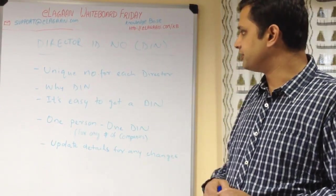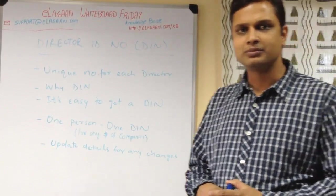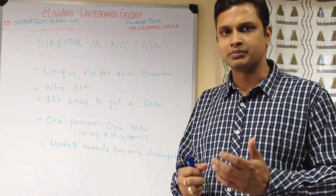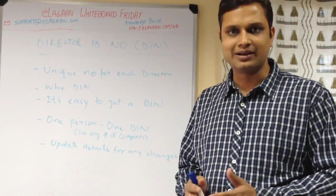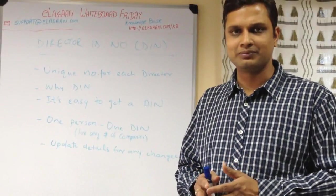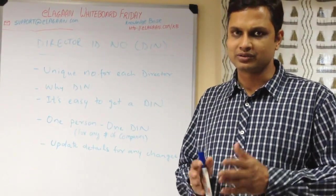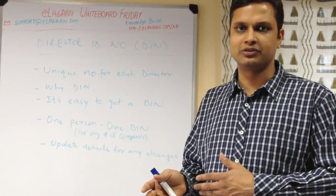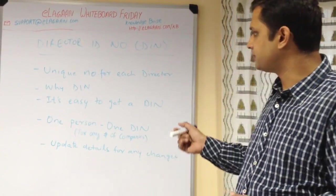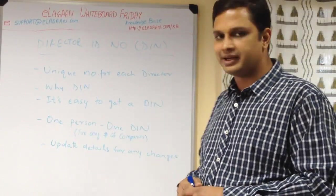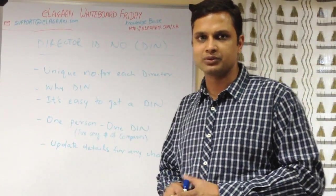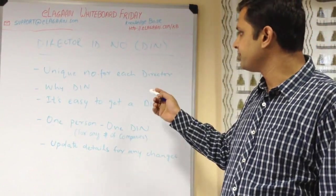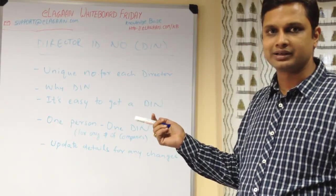So why DIN? Since a director is a responsible position, it comes with a lot of ownership, responsibility, and authority. The government decided there should be a separate database to track each and every person's details, so that any important communication can be properly done. That is why they came out with the idea of a DIN database, where anyone who is or wants to be a director must first get a DIN.